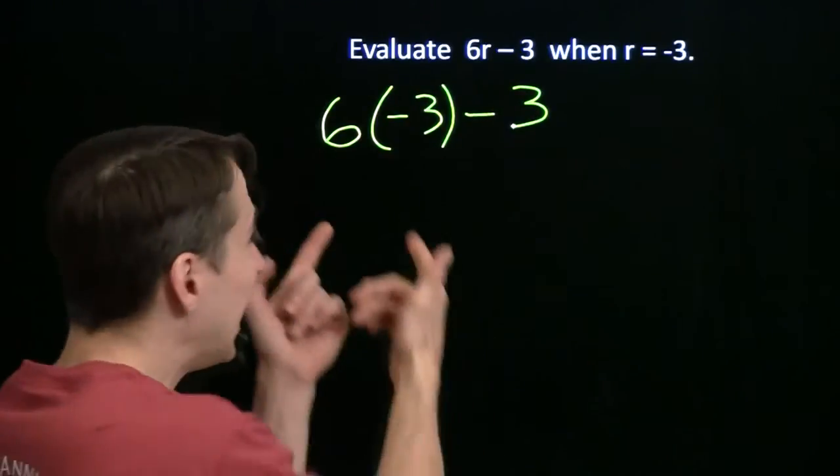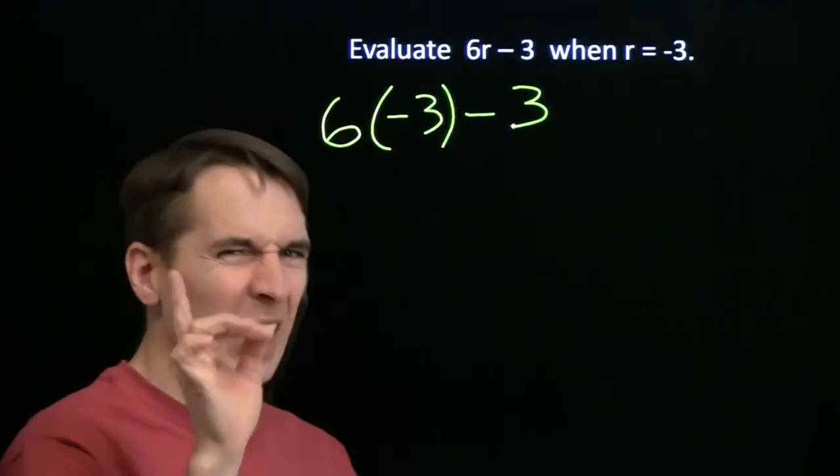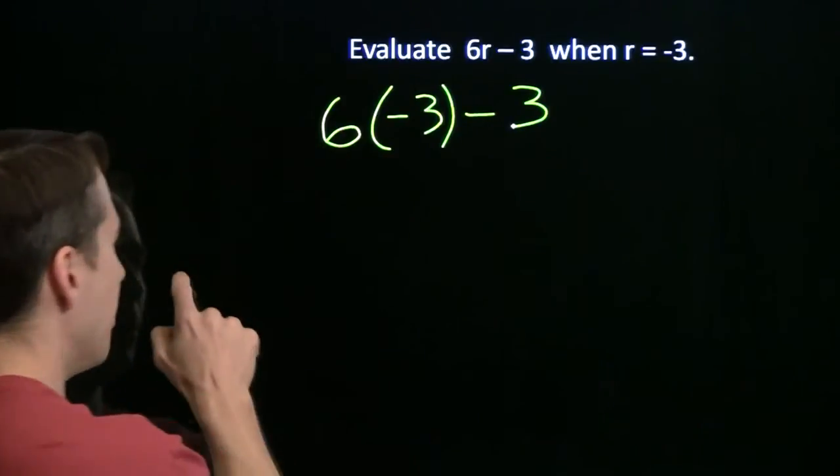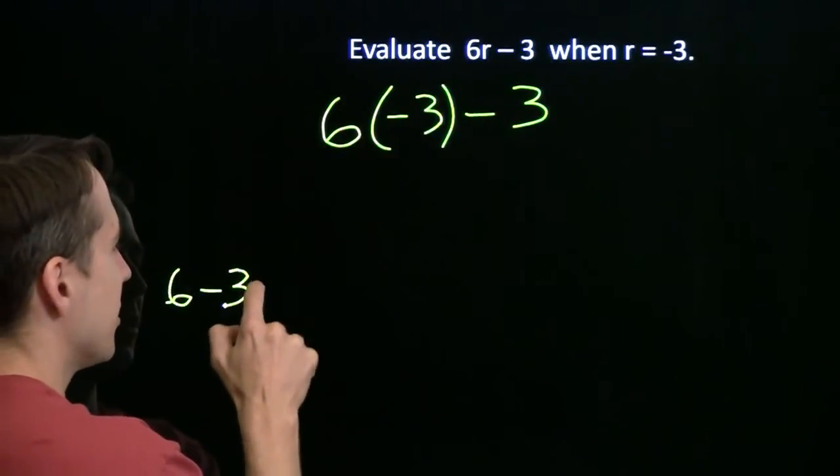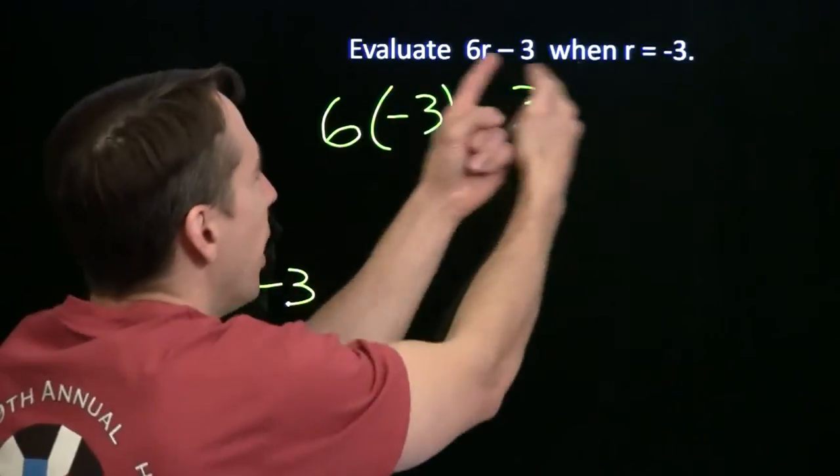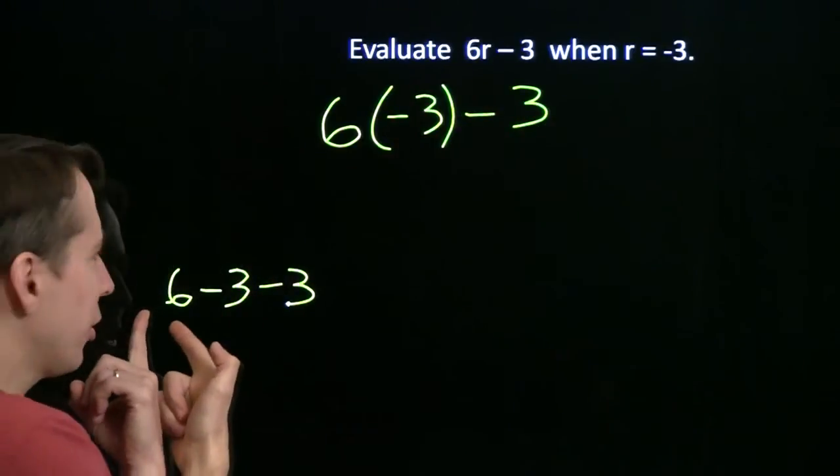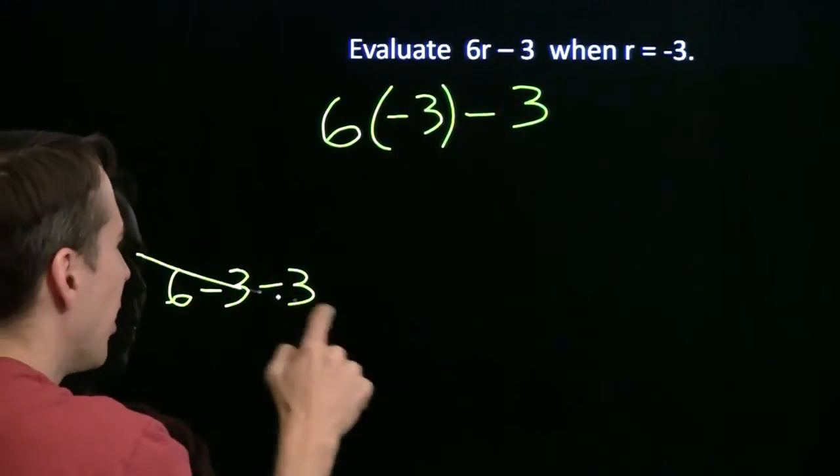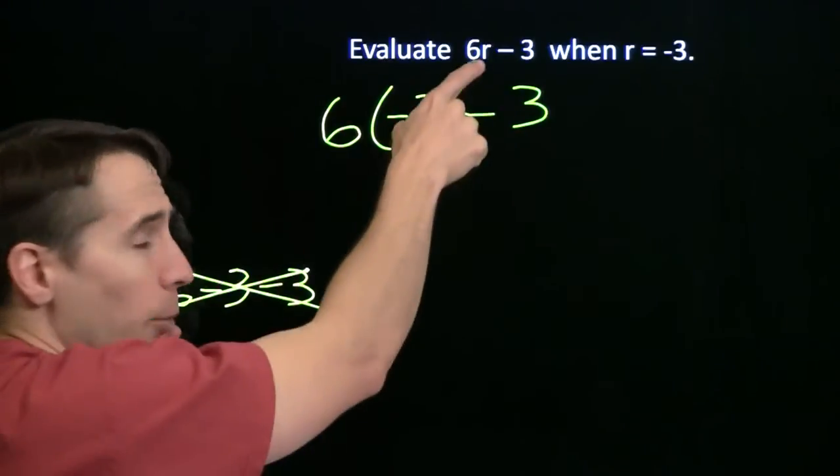See, I put the parentheses in, it's very clear that I'm multiplying. If I hadn't put the parentheses in, I might have written something like this. If I had just written minus 3 right there for r, now it looks like it's 6 minus 3 minus 3. That's wrong. That's 0. That's not what this equals.